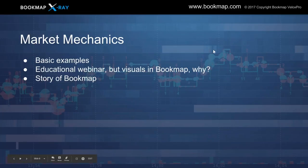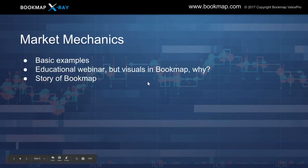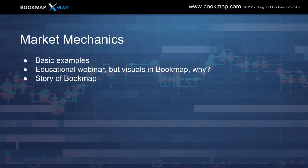Now, market mechanics — we're going to go through some basic examples. This course is about education, but we're going to show Bookmap because it visualizes this behavior very nicely. The story of Bookmap: we came from the HFT environment developing algos, trading in high-frequency environments, and needed some sort of visualization of where those trades were getting filled. Software was developed to understand that, and that led to Bookmap becoming a product.